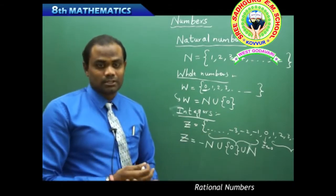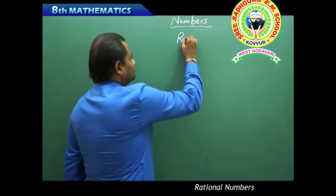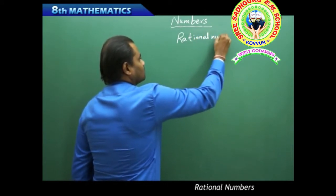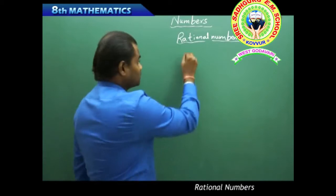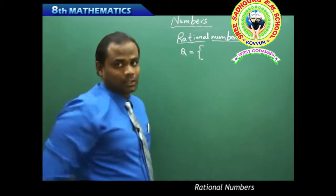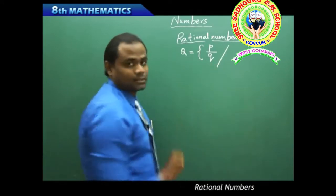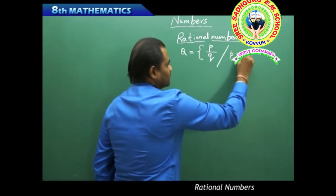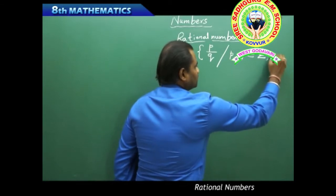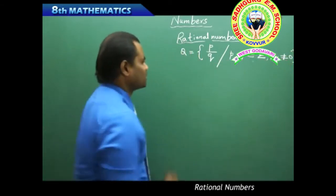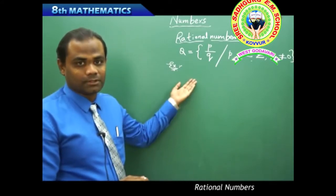Next comes the set of rational numbers, which is what we'll discuss in this session. Rational numbers are denoted with capital Q. We define rational numbers in set-builder form as all numbers which can be written in the form P/Q, where P and Q must be integers and Q should not be equal to 0.